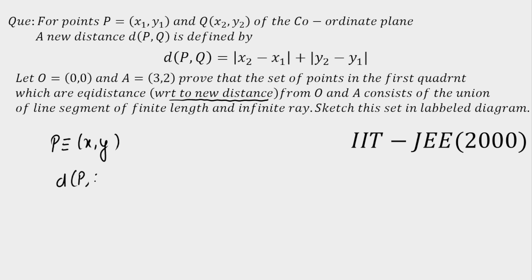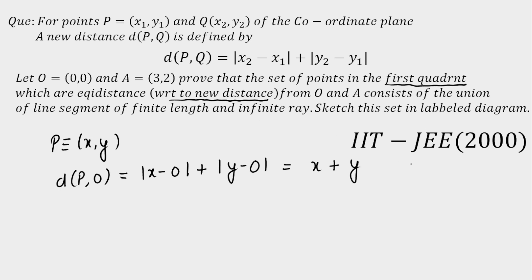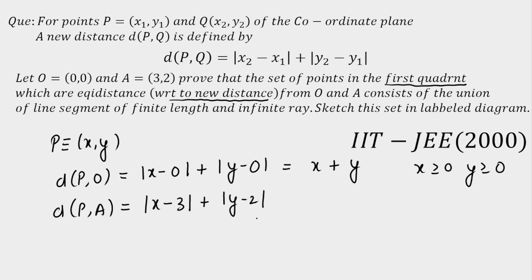Let P be a point moving such that it is equidistant from the origin and from point A. The distance of P from the origin using the new formula is |x−0| + |y−0|. Since we are in the first quadrant, x ≥ 0 and y ≥ 0, so this simplifies to x + y. The distance of P from A is |x−3| + |y−2|. Equating the two: x + y = |x−3| + |y−2|.